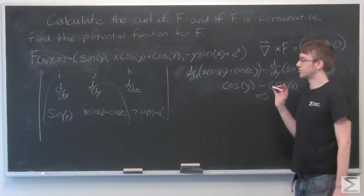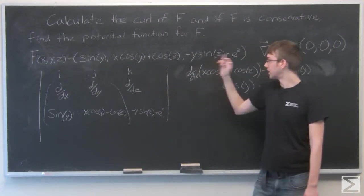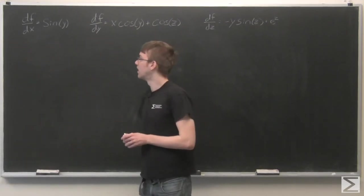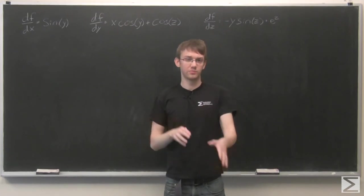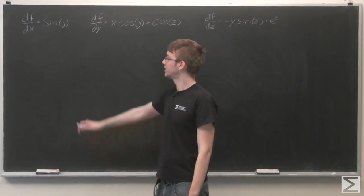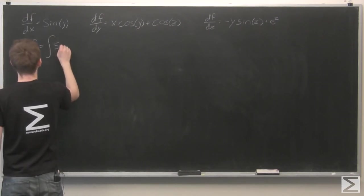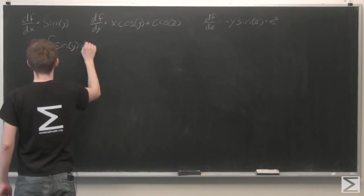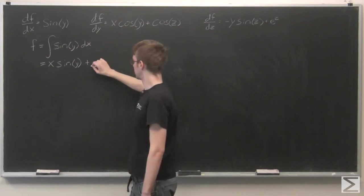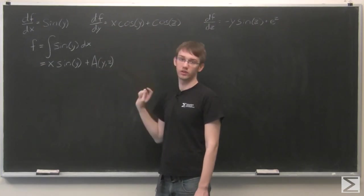The potential function is going to be a function, small f, for which the first component is the partial derivative with respect to x, the second is the partial derivative with respect to y, and the third is the partial derivative with respect to z. We don't just want to integrate each one of them and piece them together — there's a much more analytic way to approach this. So first we integrate the first term with respect to x, and for that we get x sin(y) plus an unknown function in terms of y and z, because we've only integrated with respect to x and still have to figure out what the y and z terms are.